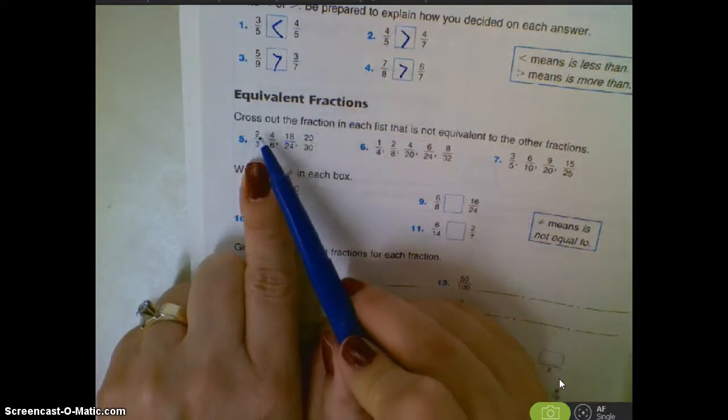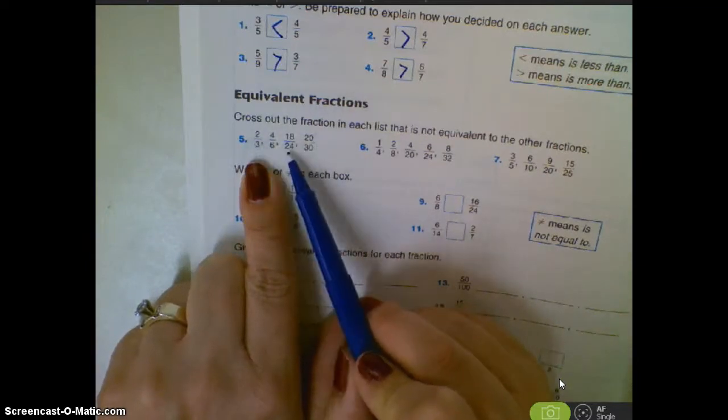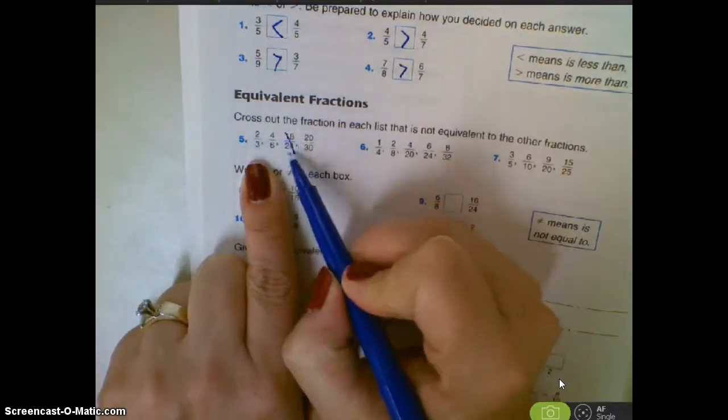I'm thinking times nine. Two times nine would be 18. Three times nine would be 27. So this one is not equivalent.